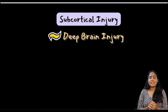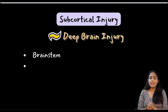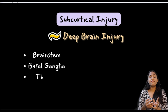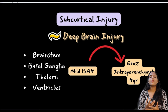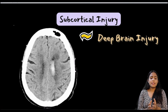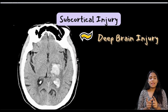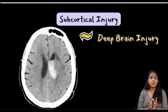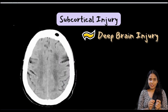Moving on to subcortical or deep brain injury, where the deeper brain structures are involved — including the brain stem, basal ganglia, thalamus, and even the ventricles. These may range from mild traumatic subarachnoid hemorrhage to a gross intraparenchymal hemorrhage. This scroll set shows a large intraparenchymal hemorrhage in the left basal ganglia region with extension into the left lateral ventricle, where the blood forms a cast in the lateral ventricle.